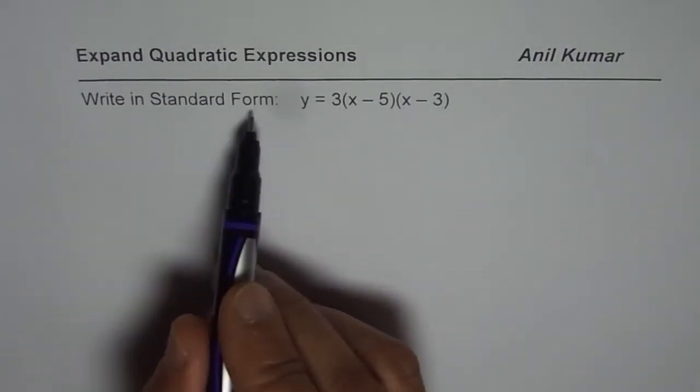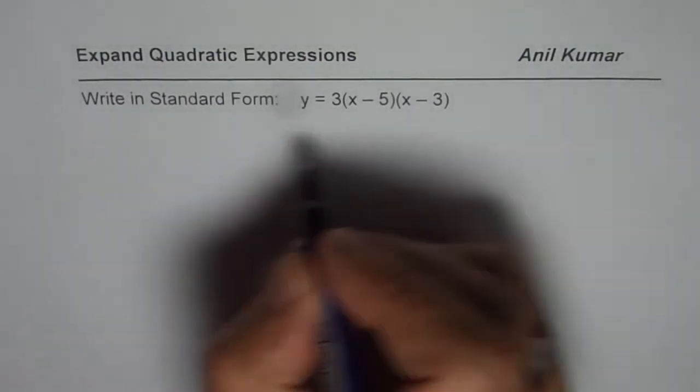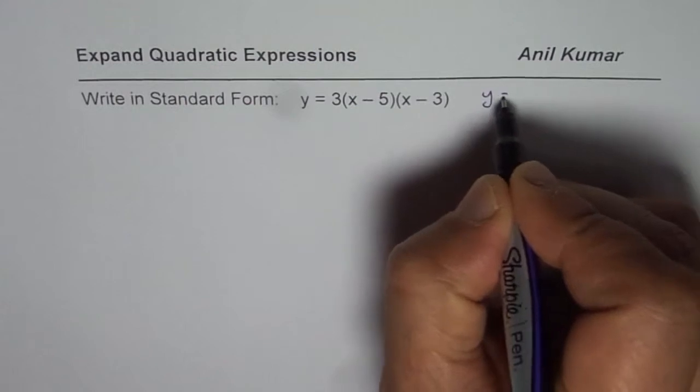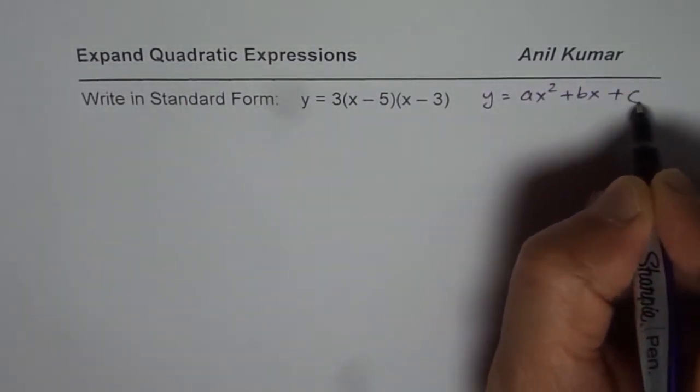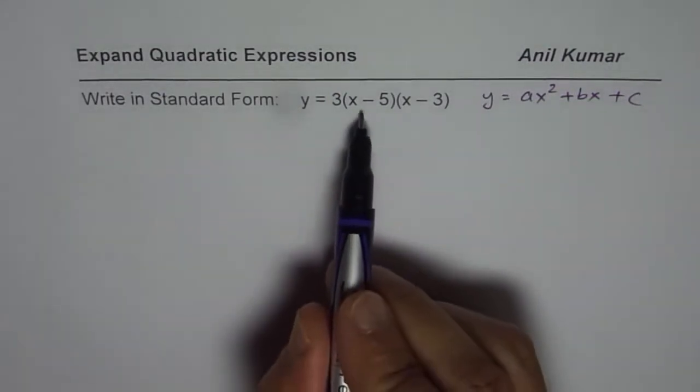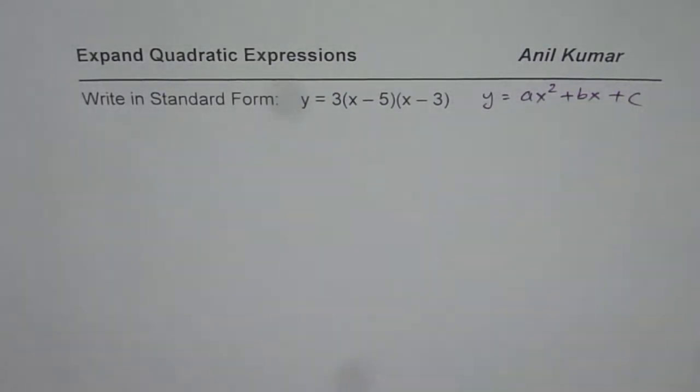Now what do you mean by standard form? The standard form is y equals ax square plus bx plus c. That is the standard form. This one is a factored form. So let us see how to write it in standard form.